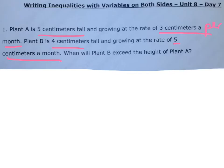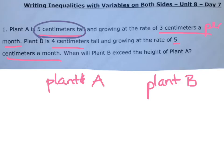First, what we need to do is we need to put our numbers and our variables on each side where they go. So we're comparing plant A and plant B. Plant A is going to be on one side, plant B is going to be on the other side. We need to find our keywords that tell us what goes on each side. For plant A, it's five centimeters tall already.